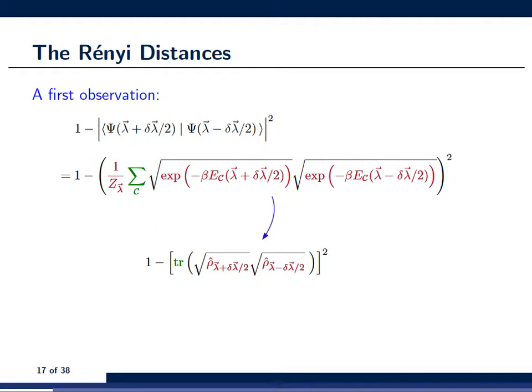Now, of course, a natural generalization is to take the exponentials and replace them by equilibrium density matrices. And, of course, also to take the summation over the configurations and replace it by the trace. And this is giving me the third line on this slide.